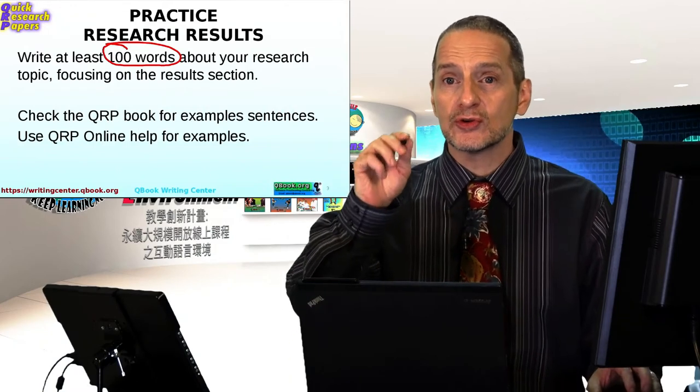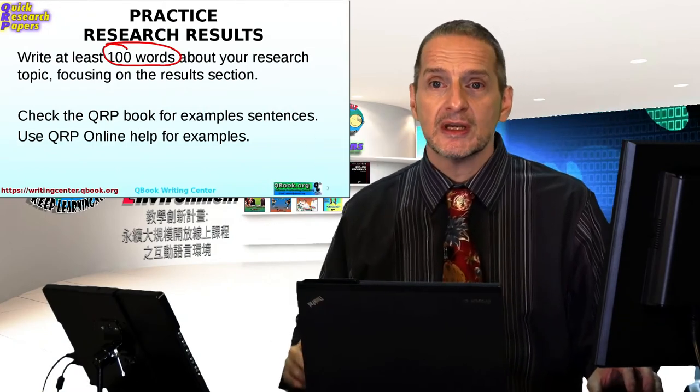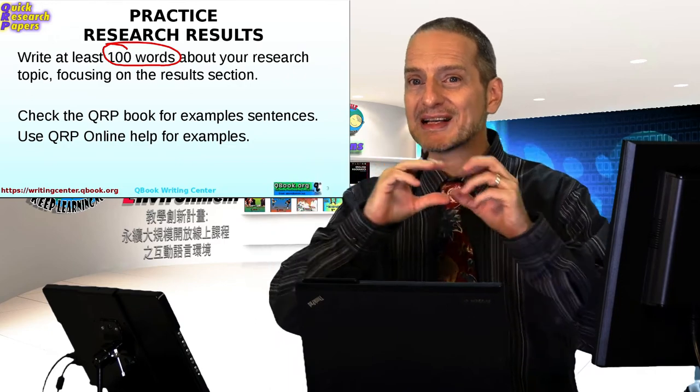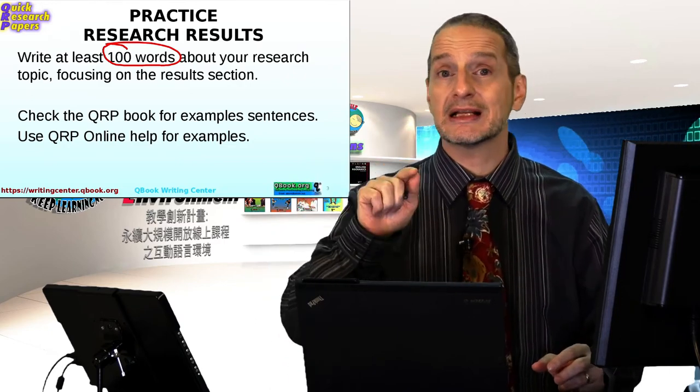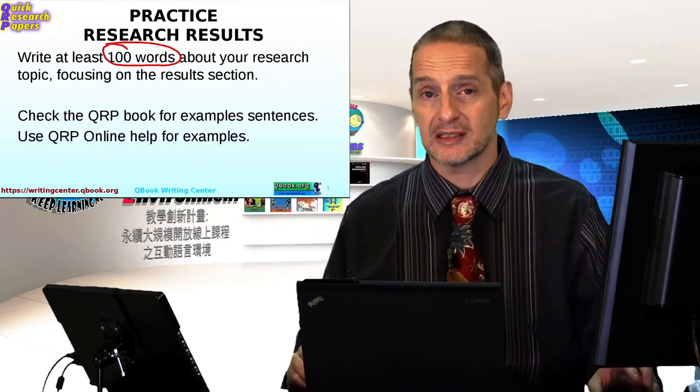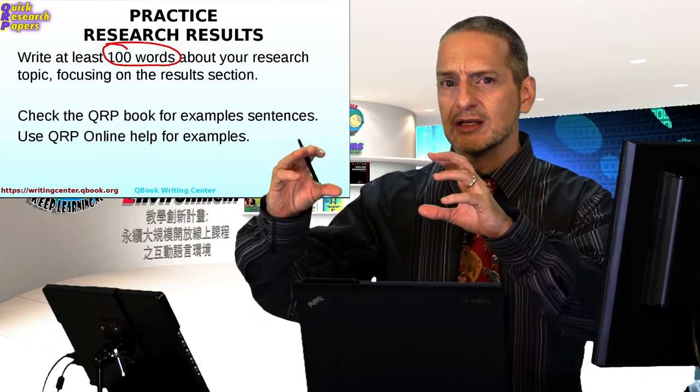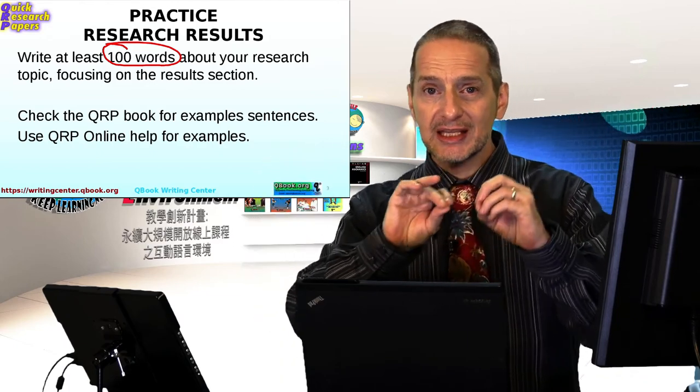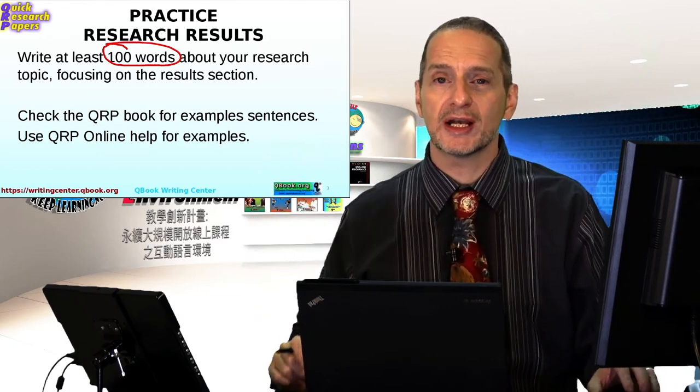Remember, use your QRP online system, and there's always that little yellow box that appears next to where you're writing. You can click there to get example sentences. It's a great idea to try to copy some sentences and then change it to match what you're writing about.